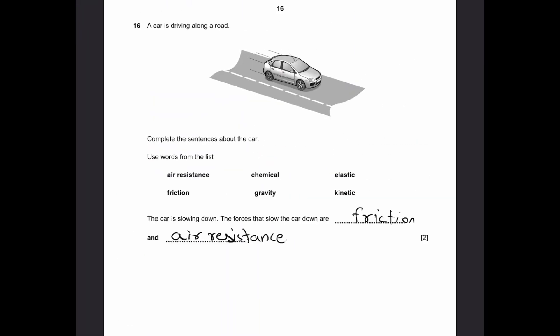Question 16. A car is driving along a road. Complete the sentences about the car. The car is slowing down. The forces that slow the car down are air resistance and friction. Friction acts in the opposite direction on the ground, and air resistance acts on the air, pushing against the windscreen and front of the car to slow it down.